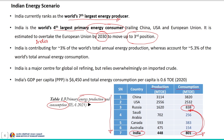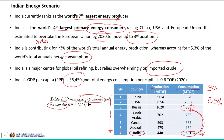India contributes 3 percent of the world's total annual energy production while accounting for 5.3 percent of the world's total annual energy consumption. India is a major centre for global oil refining but relies overwhelmingly on imported crude. India's GDP per capita and total energy per capita is 0.6 ton oil equivalent. This gives information about the primary energy consumption and production pattern in India.